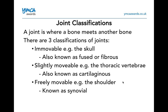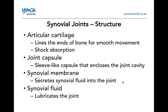With synovial joints, the structure includes articular cartilage, which lines the ends of the bones for smooth movement and helps with shock absorption. You've got your joint capsule, which is a sleeve-like capsule that encloses the joint cavity. The synovial membrane secretes synovial fluid into the joint, and the synovial fluid lubricates the joint. Synovial fluid is created especially when you warm up — it goes around the joints so they don't rub together, which is why it's so important to warm up.